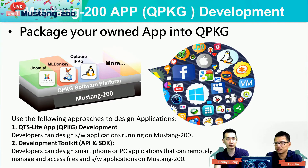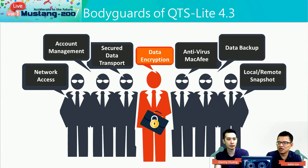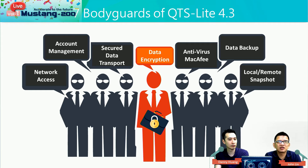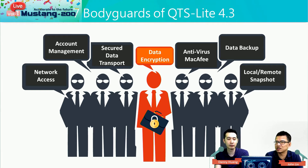Those are the three ways to drive the Mustang 200 accelerator card. There are seven bodyguards to ensure your information security and data protection. The seven bodyguards are: network access, account management, data transport, data encryption, antivirus, data backup, and the last one is snapshot.